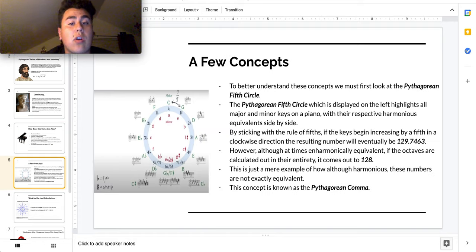A few concepts to better understand this whole material. To better understand these concepts, we must first look at the Pythagorean fifth circle. The Pythagorean fifth circle, which is displayed on the left, highlights all major and minor keys on the piano with the respective harmonious equivalents side-by-side. By sticking to the rule of fifths, if the keys begin increasing by a fifth in a clockwise direction, then the resulting number will be eventually 129.7463.